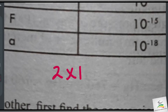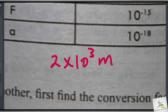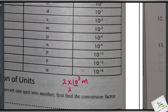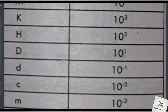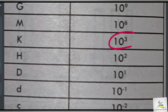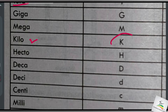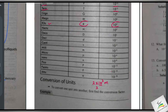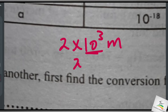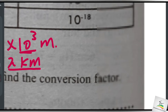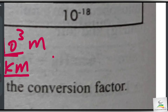Mega is two times ten to the power of three — no, mega is ten to the power of six. And kilo is ten to the power of three. So two kilometers, for example, is two kilo meters.